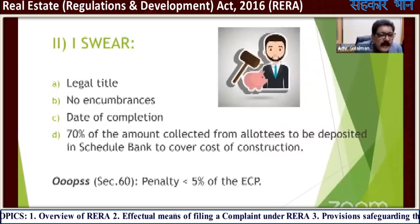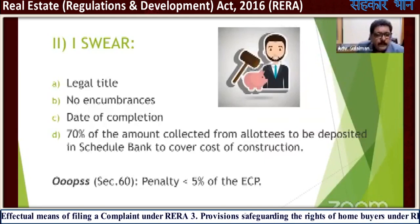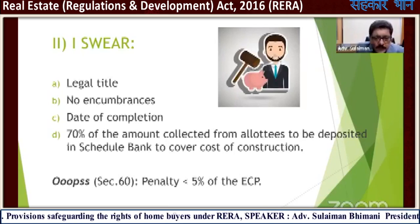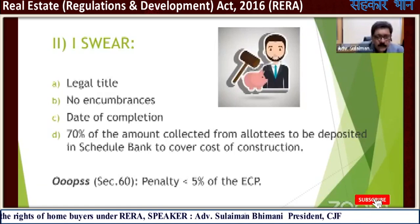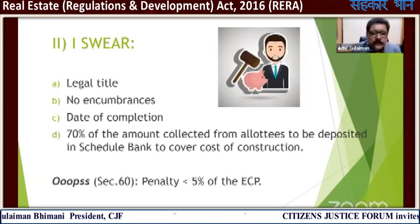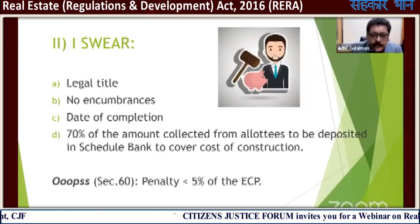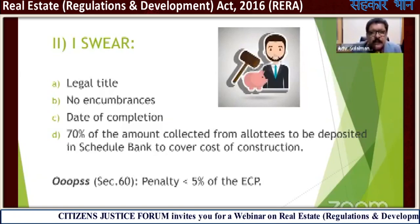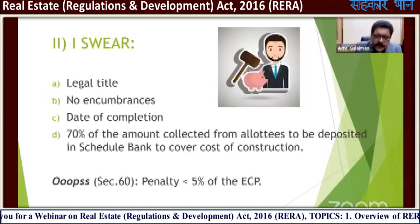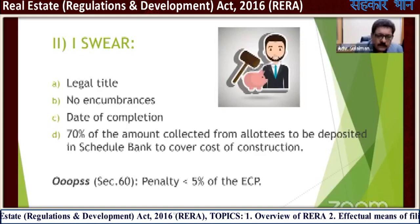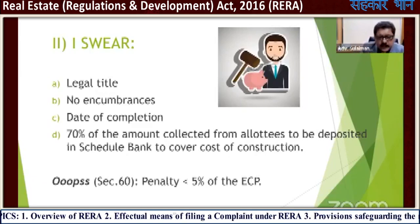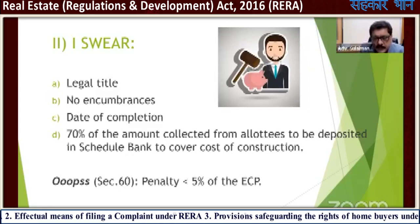Now the builder has to swear legal title, confirm there are no encumbrances, and state the date of completion — which normally no builder used to provide. Also, 70% of the amount collected from the allottees must be deposited in a scheduled bank to cover the cost of construction of that same project. Previously, builders used to collect money from home buyers and put it into some other project. He cannot utilize the money anywhere else.